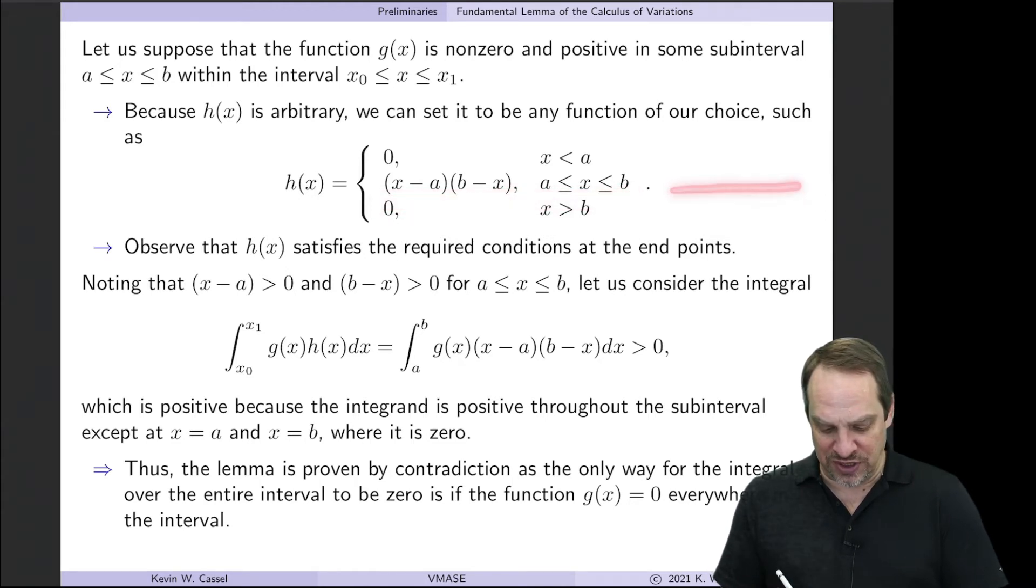So essentially it looks something like this. Here's a and b, and it has a parabolic form, 0 before and 0 after. Now you'll notice h(x) satisfies the required conditions at the endpoints. So we haven't violated that.